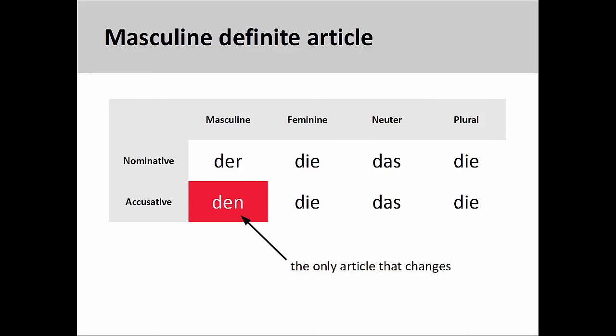We can see an important pattern here. The masculine definite article, Der, is the only article that changes from the nominative to the accusative. A rhyme I have always told my students to help them remember this change is: Der becomes Den, everything else stays the same.